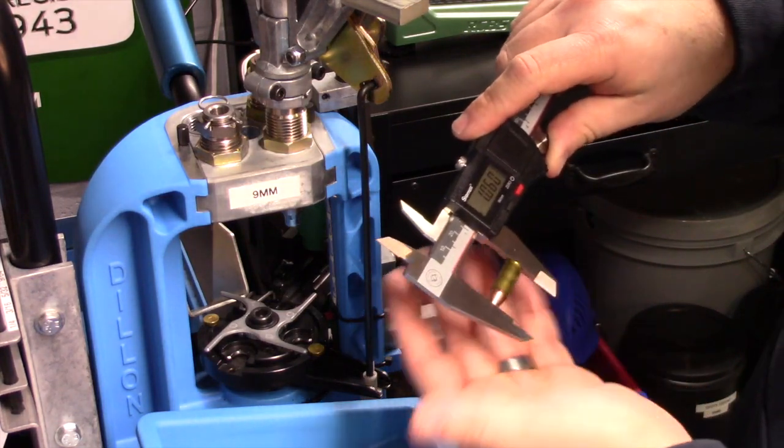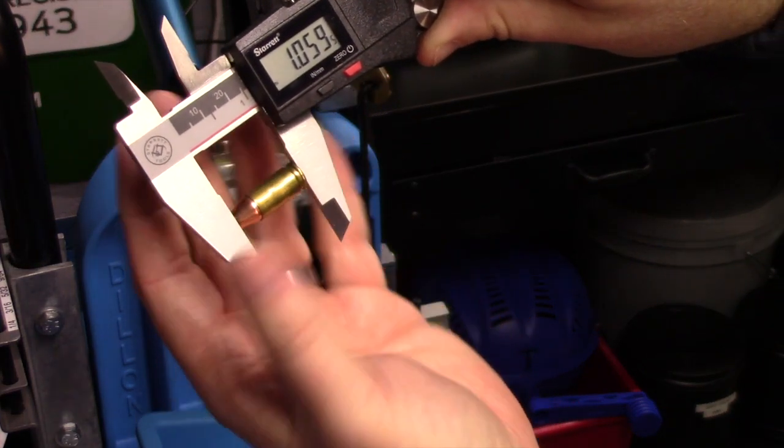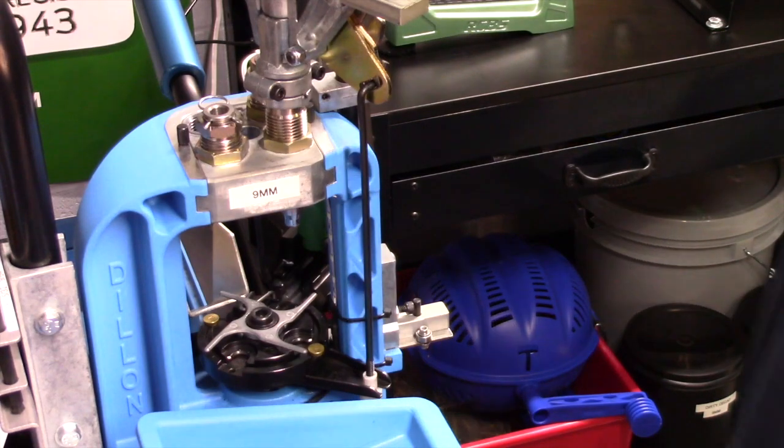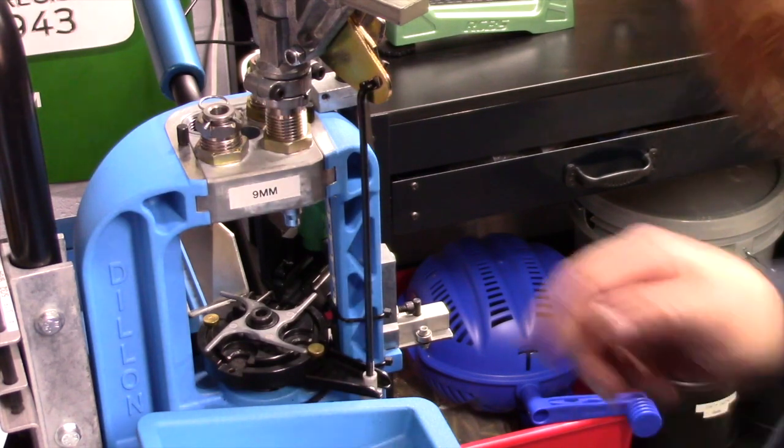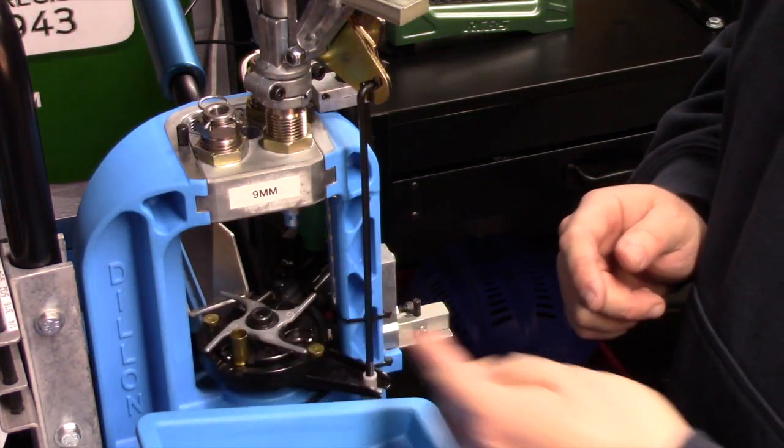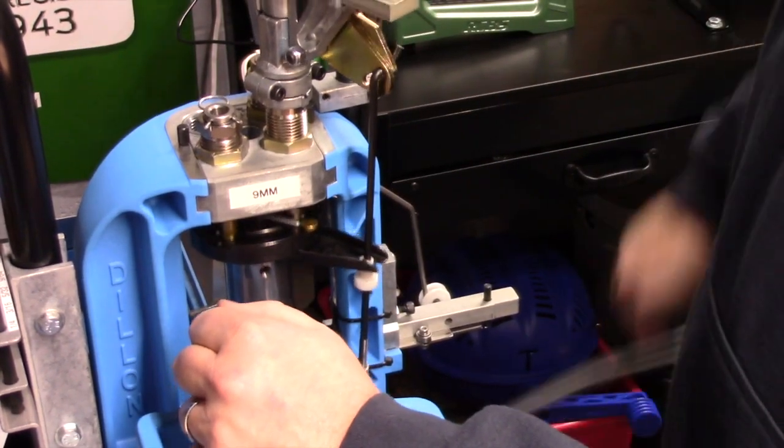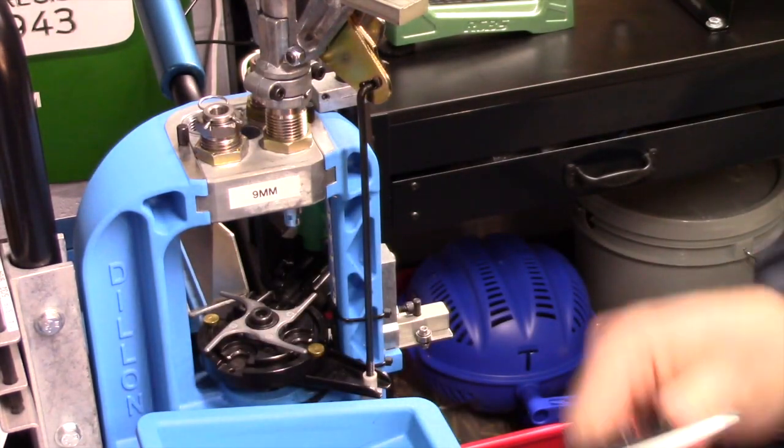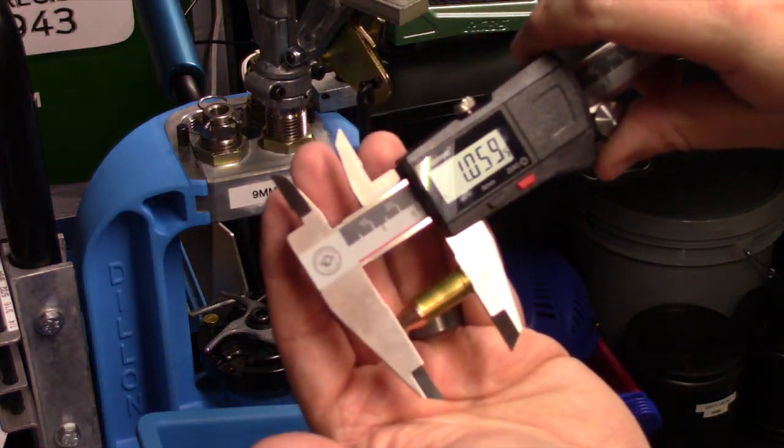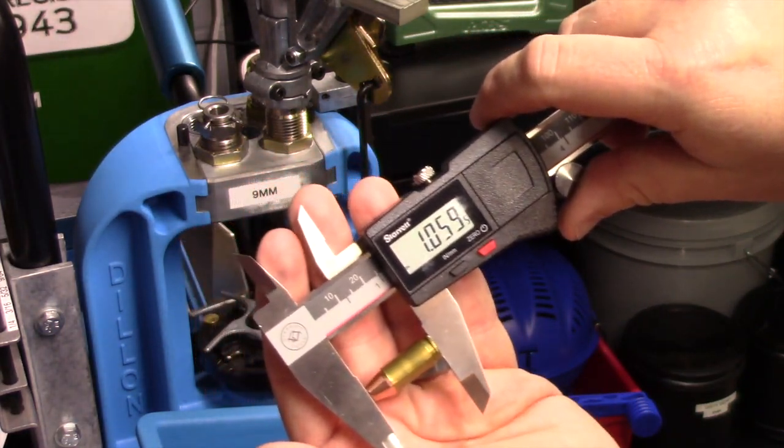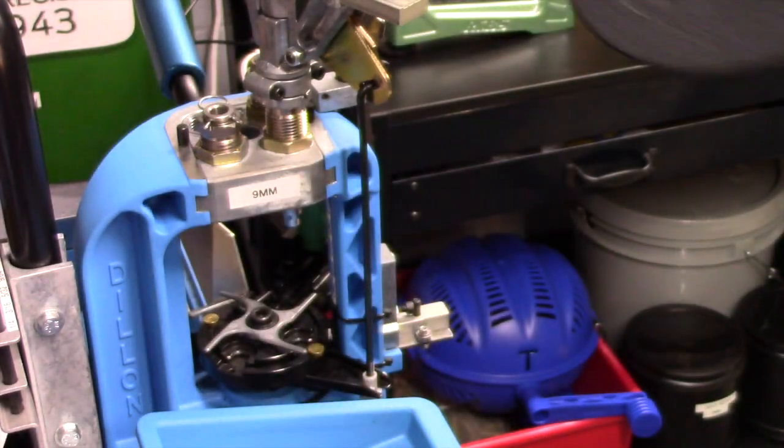We now have our case length at 1.061, 1.0595, so we are on the money. What I'm going to do is I'm gonna take another projectile and I'm gonna run this other case that I have and see how consistent we are. Once they're set, typically it's very consistent. 1.0595, so we're not going to chase that ten-thousandths, we're just going to go with it. That's exactly where we want to be.